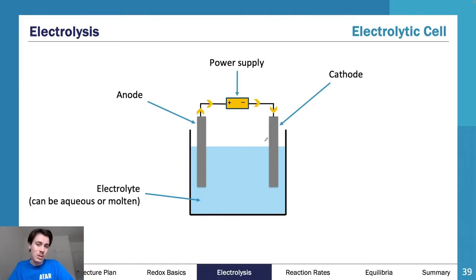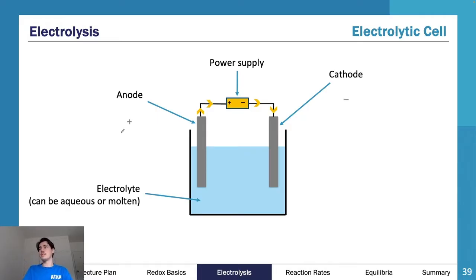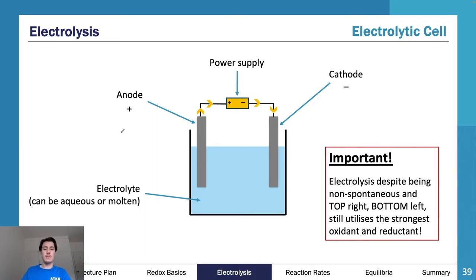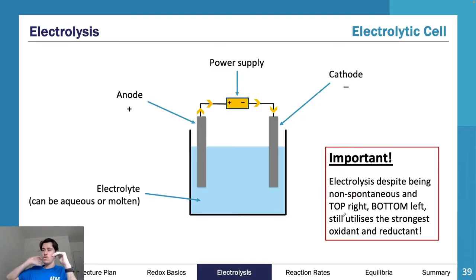A common example of an electrolytic cell has an electrolyte - aqueous or molten - containing everything, with an anode and a cathode. You supply power: the negative side has electrons flowing towards it, the positive side has electrons flowing away. Everything is essentially flipped compared to galvanic cells: the anode becomes positive, the cathode becomes negative. Cathode is negative - cats don't like electricity. Importantly, electrons still flow from anode to cathode; that does not change.